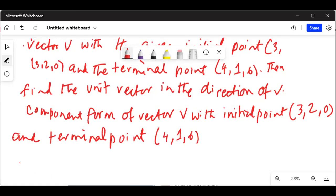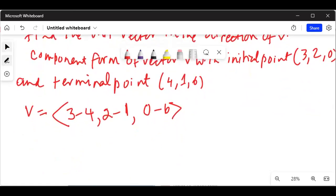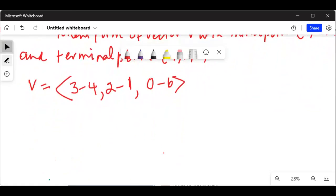So vector V is equal to 3 minus 4, comma 2 minus 1, comma 0 minus 6. Then vector V is equal to minus 1, 2 minus 1 is 1, and 0 minus 6 is minus 6.